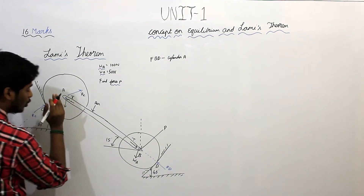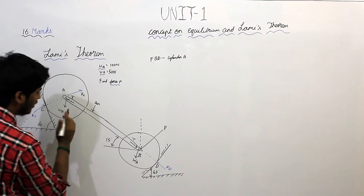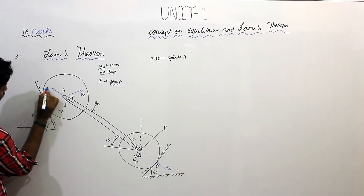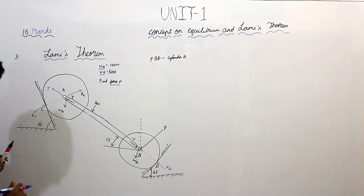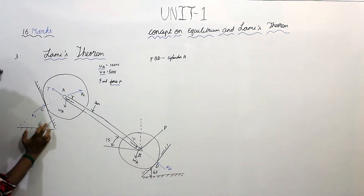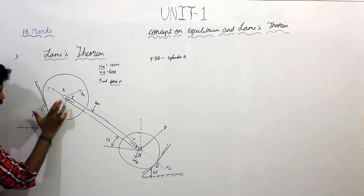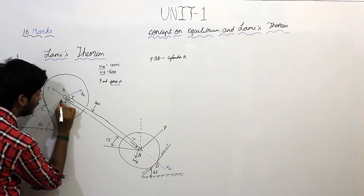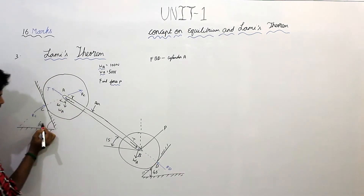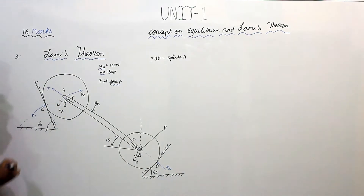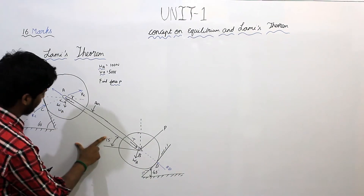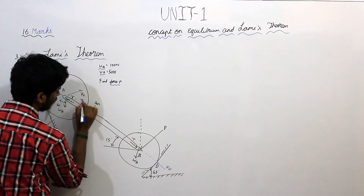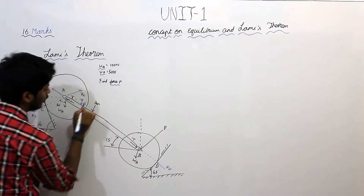RC should be acting away from this centre point. T should also be acting away from this centre. One more thing is these two angles are equal. The angle formed here is 16 degrees. These two angles are equal — if this angle is 15, it should also be 15, because opposite angles are equal.